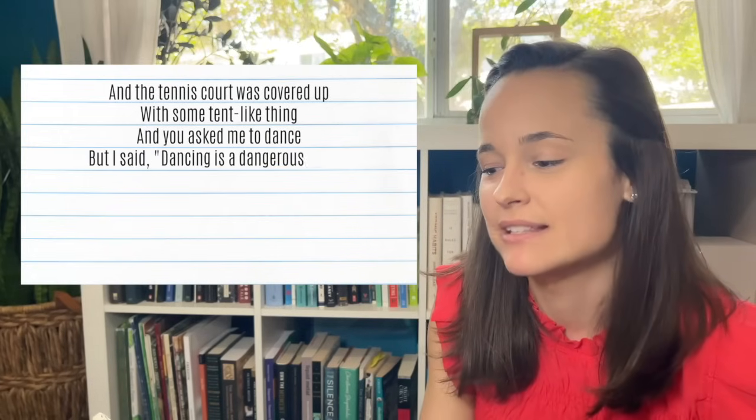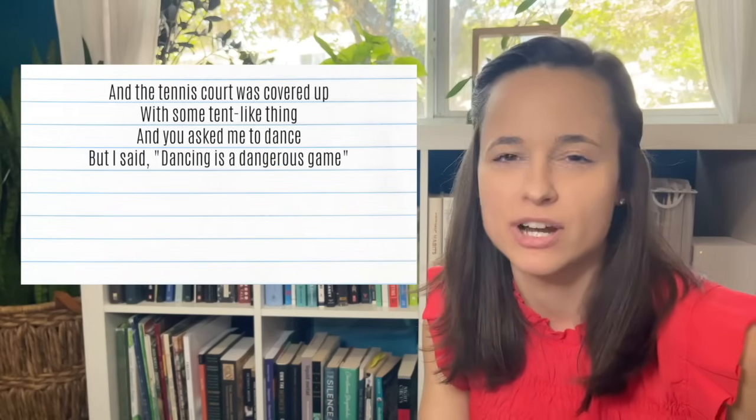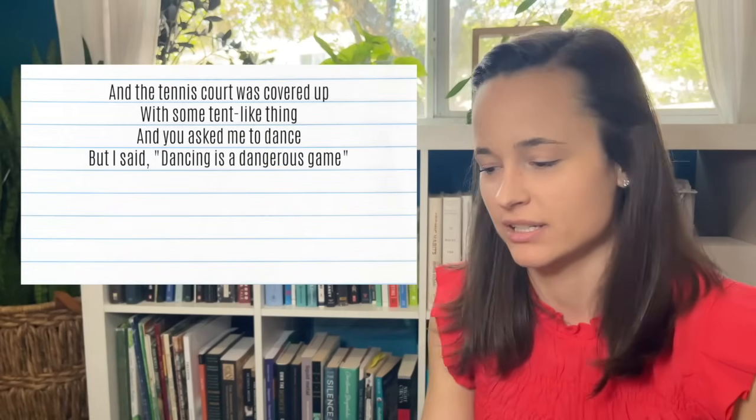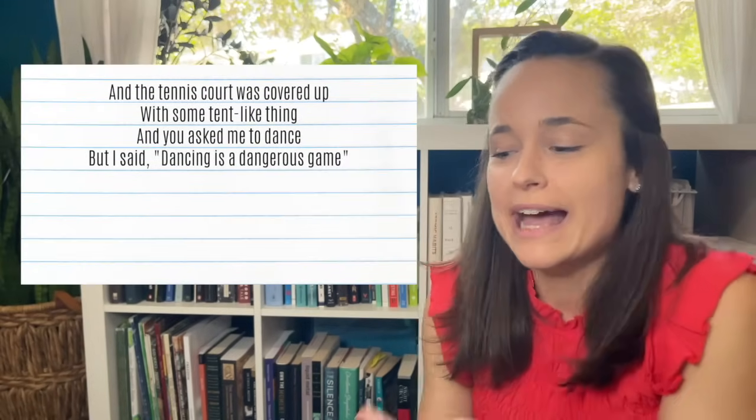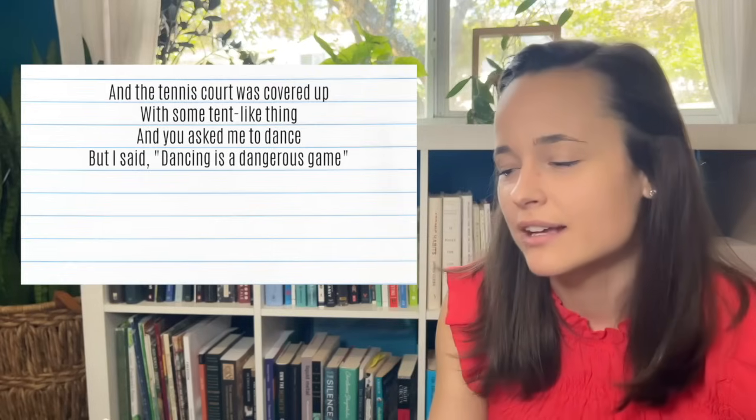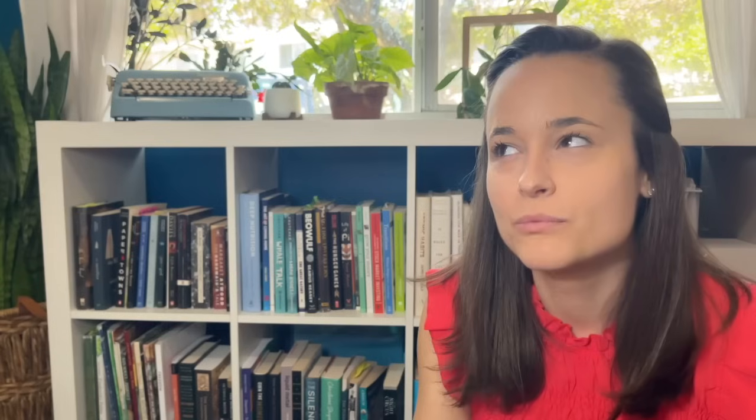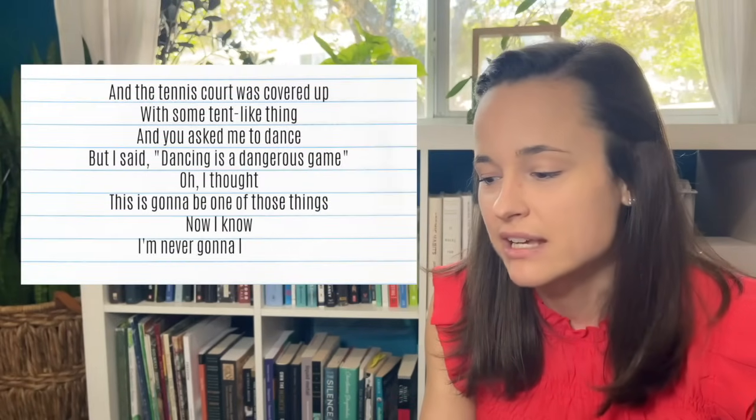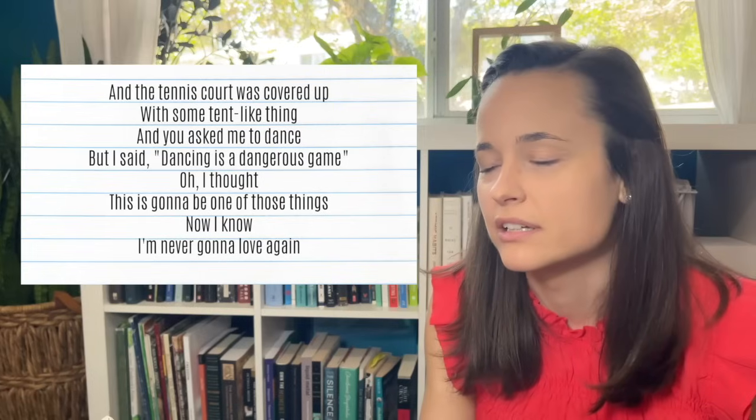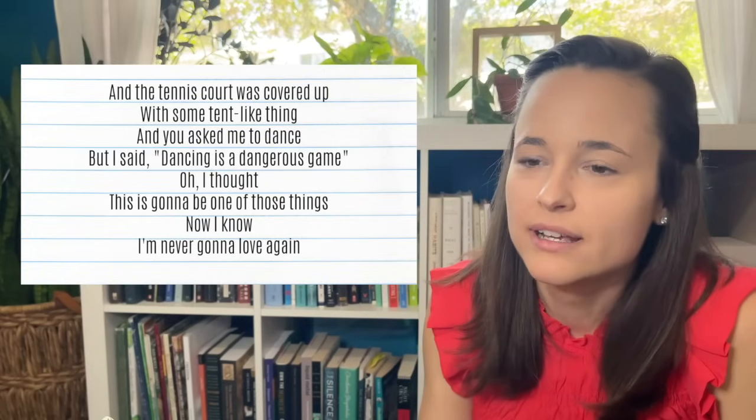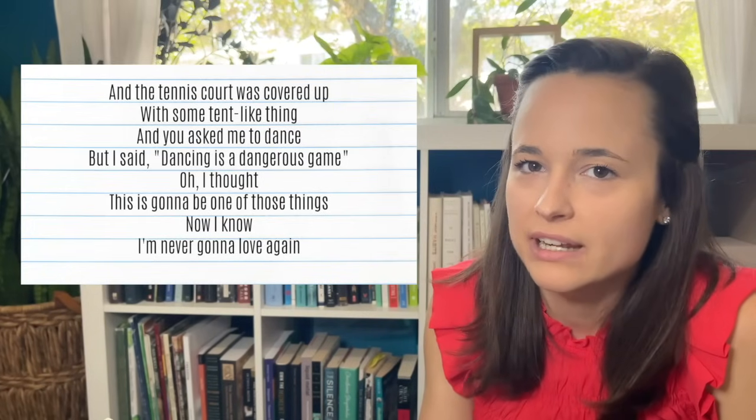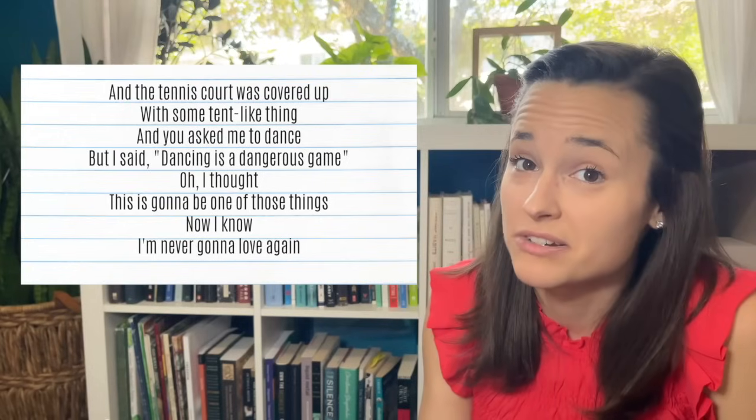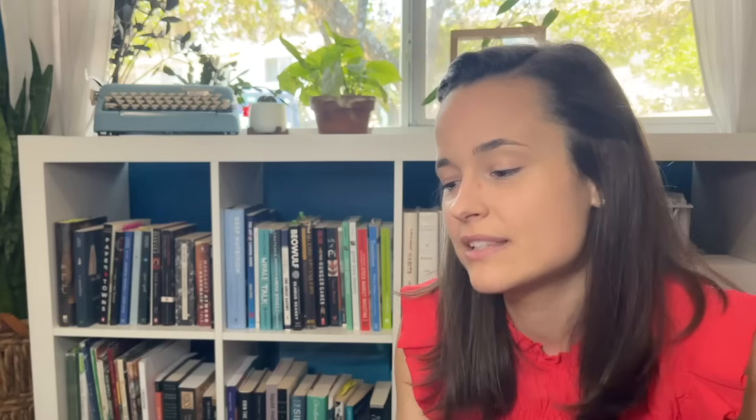You asked me to dance, but I said dancing's a dangerous game, so he's maybe trying to flirt. I'm just using he and she, because Taylor's singing it. I don't have to say person A, person B, because I'll get confused. This person's asking her to dance, maybe flirting, and she's like, dancing's a dangerous game, so she's not really wanting to give in to the allure of this person. Now I know I'm never going to love again. It's like, I'm hesitating to let you in, because I know that I'll probably fall in love with you, and then I'll never love again after that. So dancing's a dangerous game. Like, are we really going to sign up for that? This is going to be one of those things.